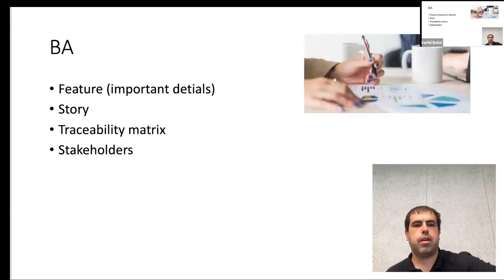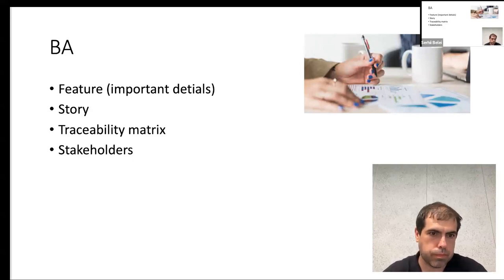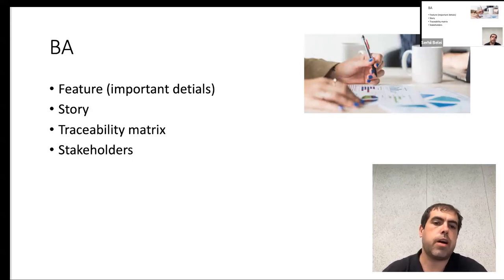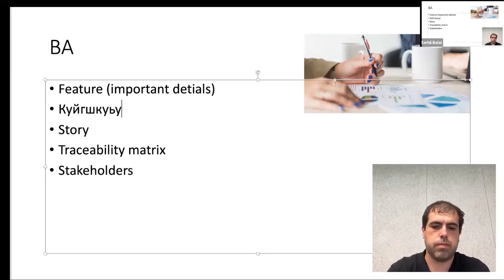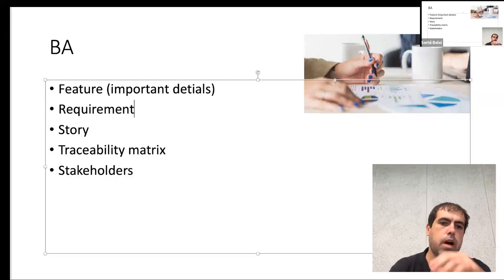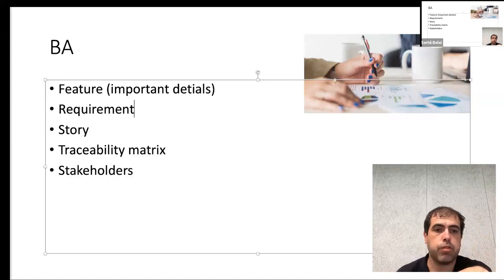Business analysts — what I heard from them — are focused on features, traceability matrix, stakeholders, and all of that. Most of their discussions are about how to get requirements, how to get a feature from a requirement, how to explain it in a story, how to trace this, how to show it to stakeholders, and how to get information back from stakeholders.